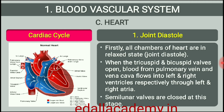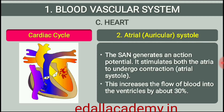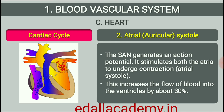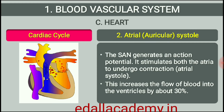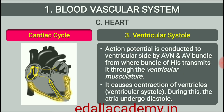Cardiac Cycle. To begin with, all the four chambers of the heart are in a relaxed state, that is, they are in joint diastole. As the tricuspid and bicuspid valves are open, blood from the pulmonary veins and vena cava flows into the left and the right ventricle respectively through the left and right atria. The semilunar valves are closed at this stage. The SAN now generates an action potential which stimulates both the atria to undergo a simultaneous contraction, the atrial systole. This increases the flow of blood into the ventricles by about 30%.